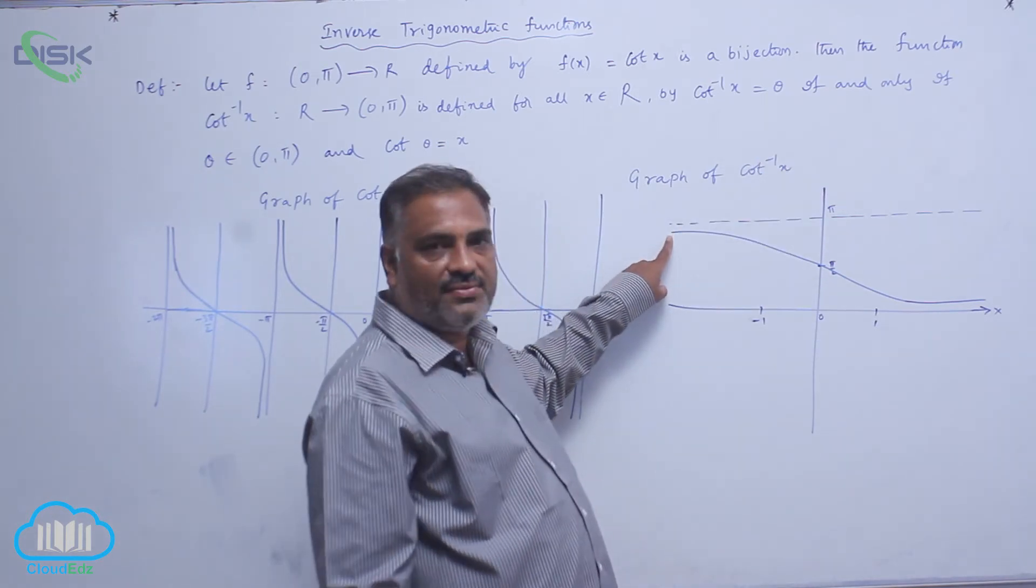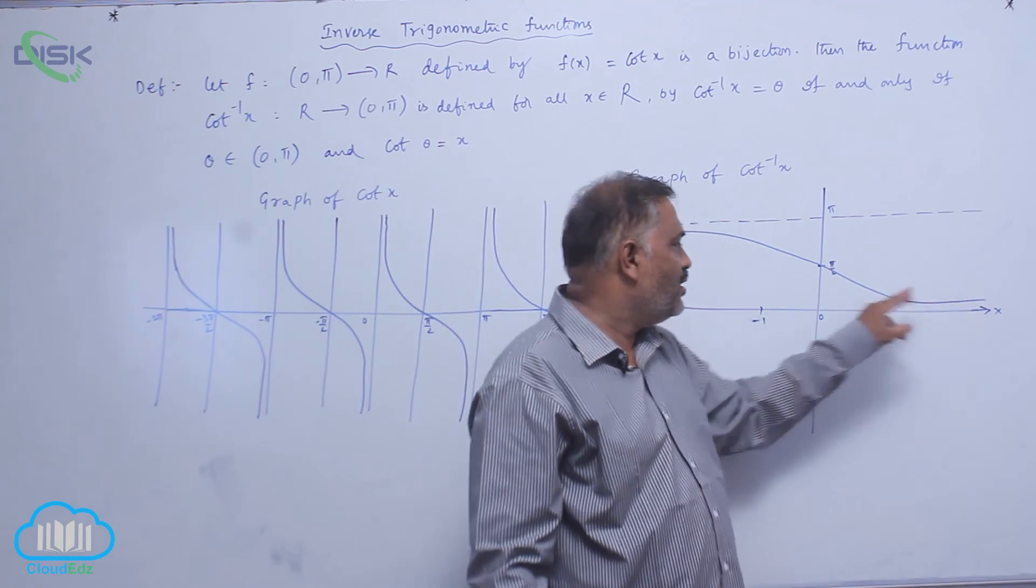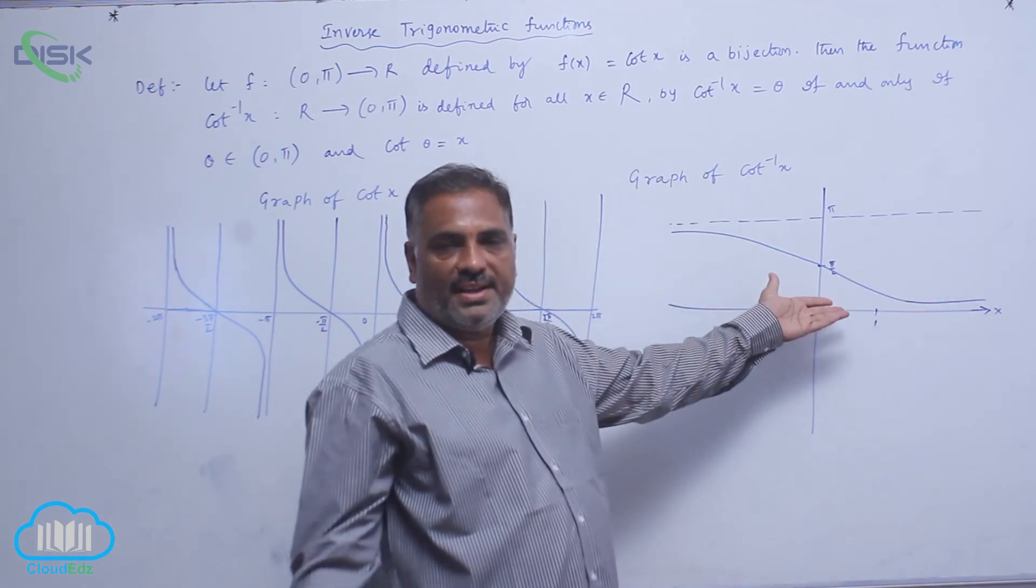It is taking minus infinity value and plus infinity value, and of course, cot infinity is always 0.